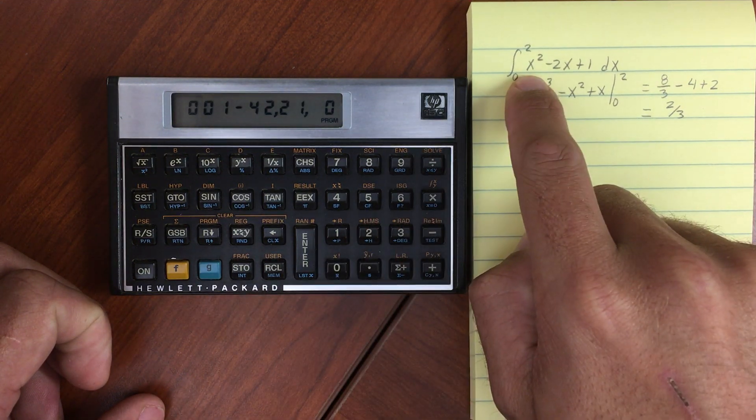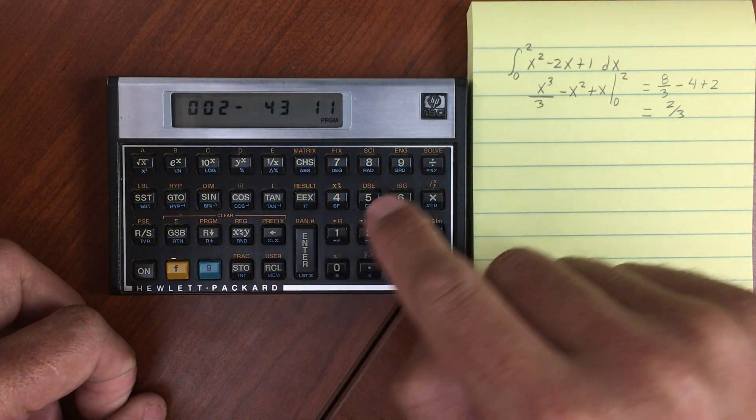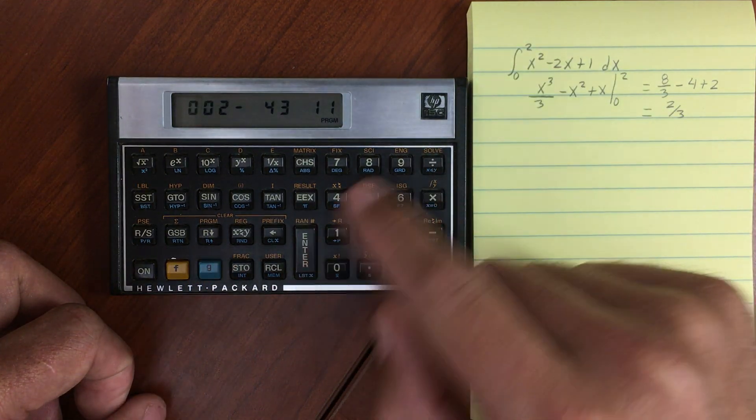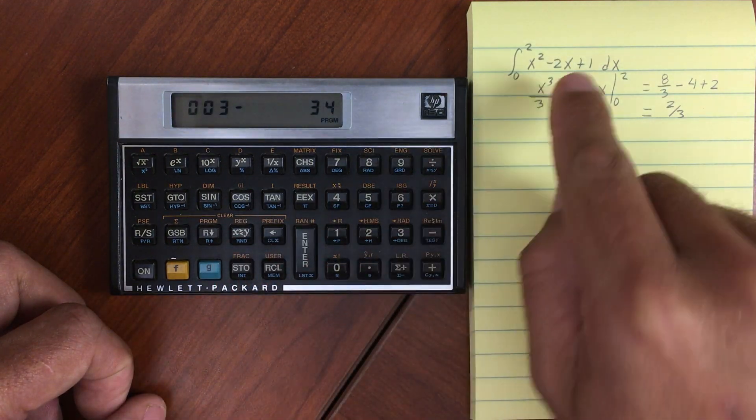Now we're going to take X and square it. And since another value of X is also in the stack, we're going to swap to bring that down into the X.